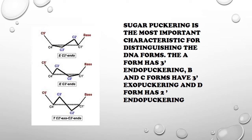The A form has 3-carbon endo puckering, B and C forms have 3-carbon exo puckering, and the D form has 2-carbon endo puckering. Sugar puckering correlates with the phosphorus-base distance.